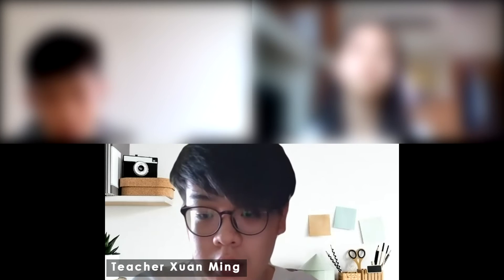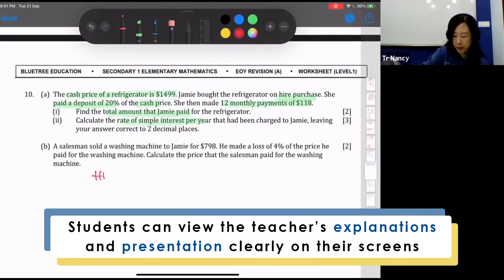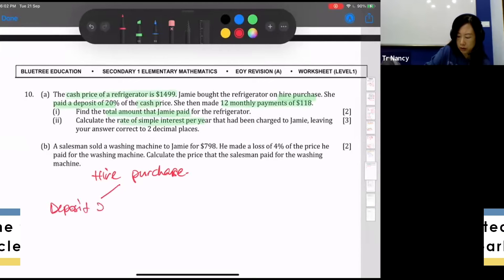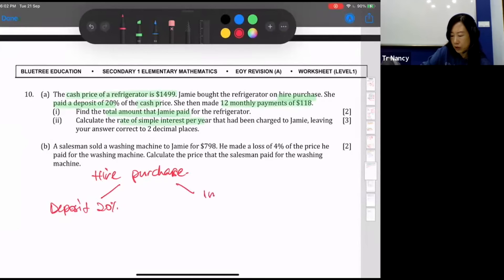Remember, hire purchase you have two parts. One part is the deposit that you pay immediately, so here it's 20%, and the other part is by installment.